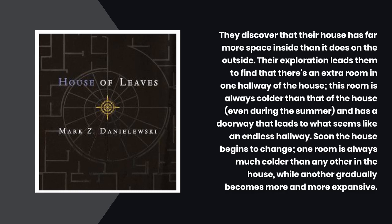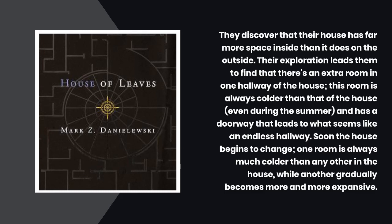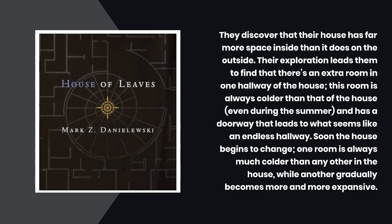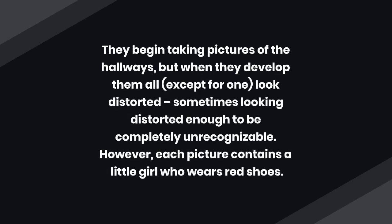Their exploration leads them to find an extra room in one hallway of the house. This room is always colder than the rest of the house even during the summer, and has a doorway that leads to what seems like an endless hallway. They begin taking pictures of the hallways, but when they develop them, all except for one look distorted — sometimes distorted enough to be completely unrecognizable. However, each picture contains a little girl who wears red shoes.